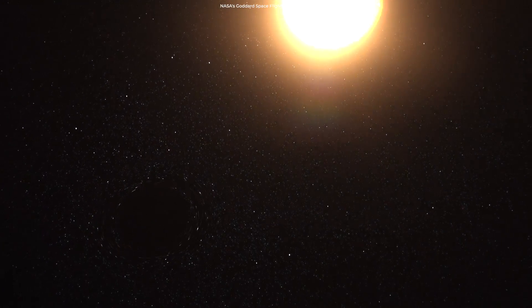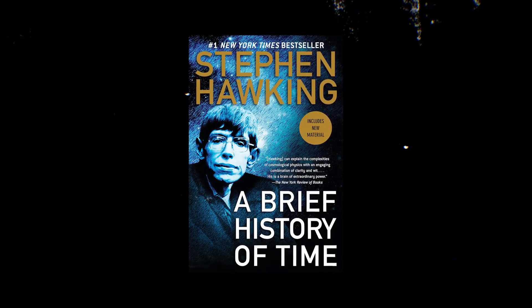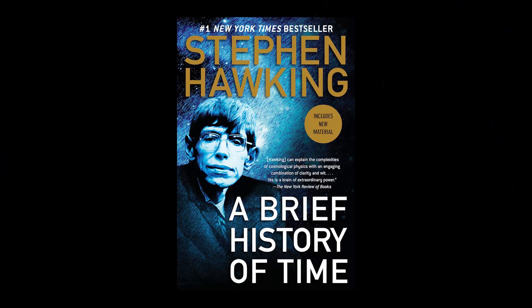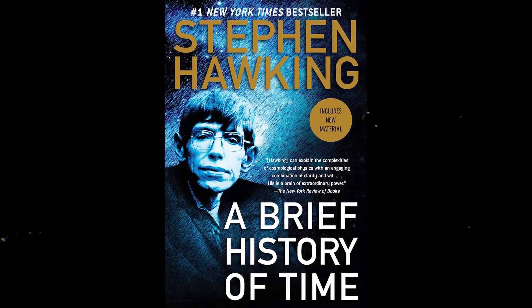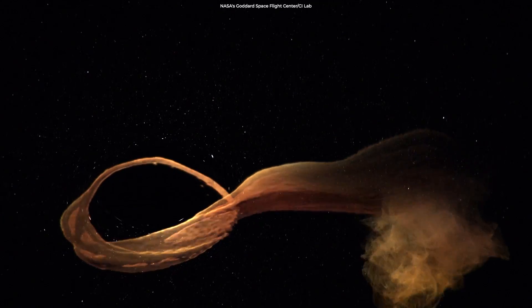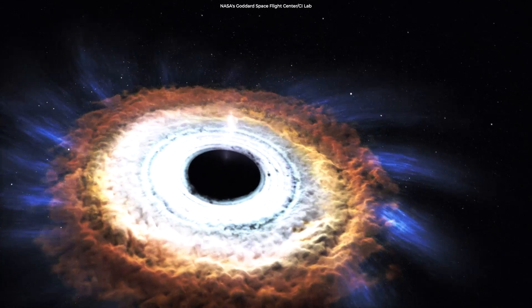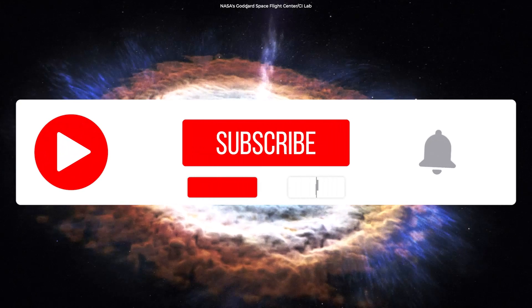The fate of anyone falling into a black hole would be a painful spaghettification, an idea popularized by Stephen Hawking in his book, A Brief History of Time. In spaghettification, the intense gravity of the black hole would pull you apart, separating your bones, muscles, sinews, and even molecules.